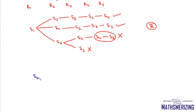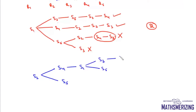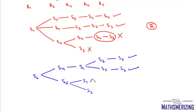Case 2: S2 sits at R1. There are two possible options for R2: S4 or S5. If S4 is at R2, it cannot have S3 or S5 adjacent, so S1 comes next, then either S3 or S5, giving two sub-cases. If S5 is at R2, it cannot have S4 adjacent, so either S1 or S3 follows; placing S1 forces S3 and S4 together which is invalid, but placing S3 then S1 then S4 works. So Case 2 gives three valid arrangements.